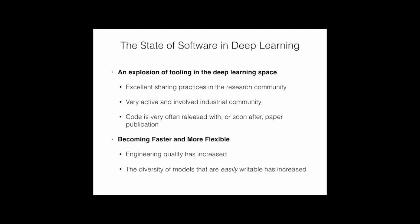The state of software in deep learning: there's an explosion of tooling in this space because of excellent sharing practices in the research community. As soon as a paper is published, you'll almost always find code implementing it, which is outstanding and unique among scientific fields. The industrial community is also very active, and the lines are blurring—industrial and academia overlap substantially. These software packages are becoming much faster and more flexible.